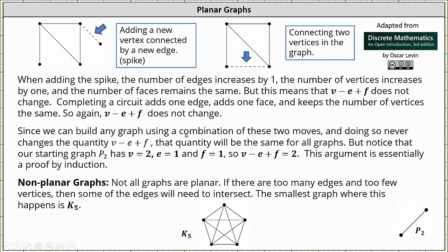So we can build any graph using a combination of these two moves, and doing so never changes the quantity V minus E plus F. That quantity will be the same for all graphs. Notice for our starting graph P2, the number of vertices is two, the number of edges is one, and the number of faces is one, which gives us V minus E plus F equals two, because we have two minus one plus one, which does equal two. This argument is essentially a proof by induction.